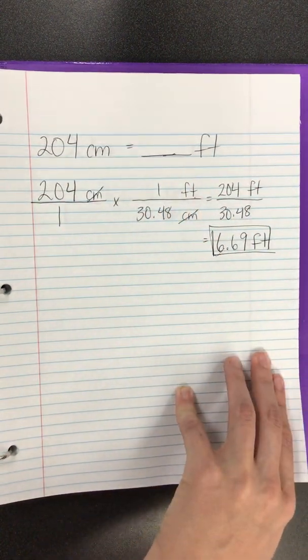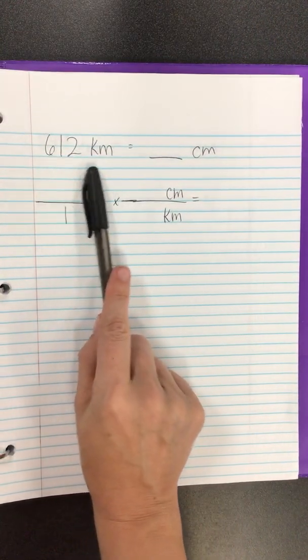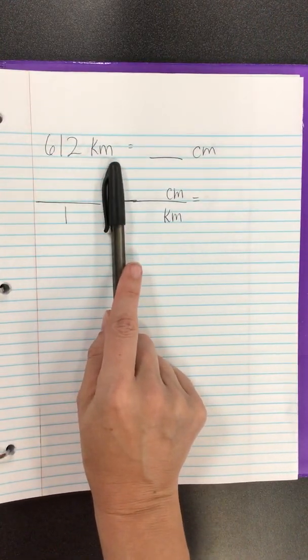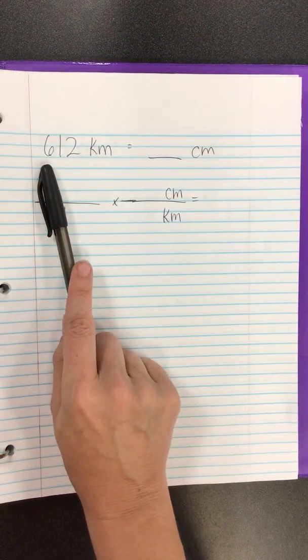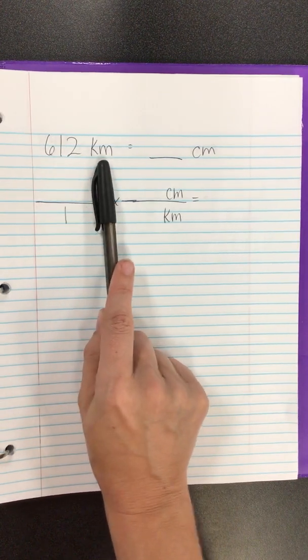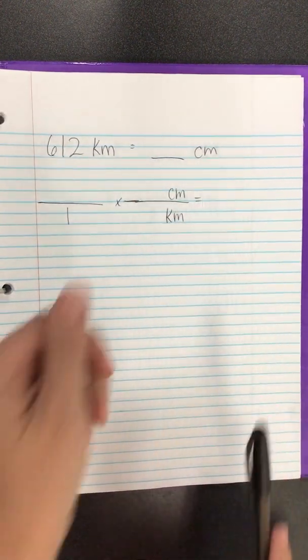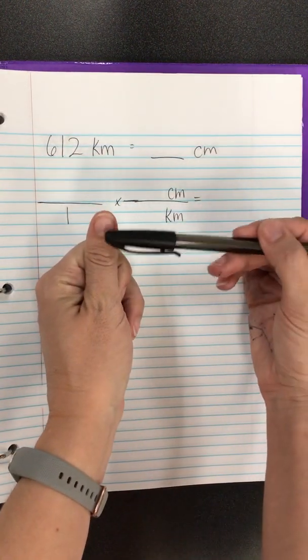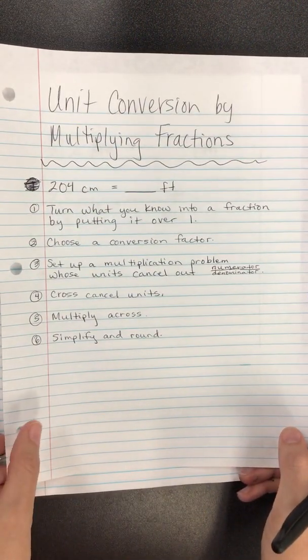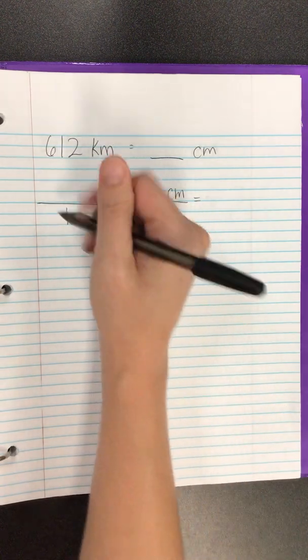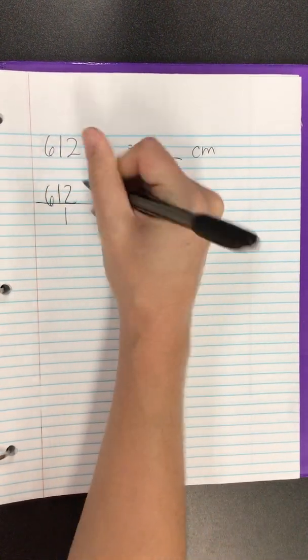Okay, let's try a different one. In this case, we have 612 kilometers, kilometers meaning 1,000 meters. So that's a very long distance. 612 kilometers equals how many centimeters? A centimeter just being about this length. So that's probably going to end up being a big number. Looking at those steps one more time, let's fly through them. Take what we know, 612 kilometers.